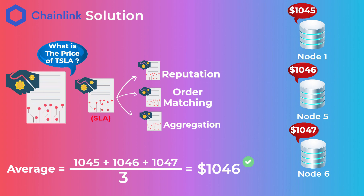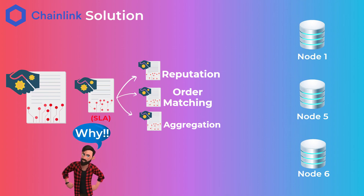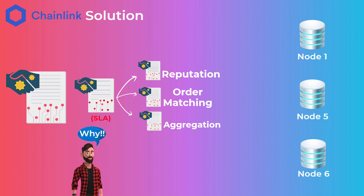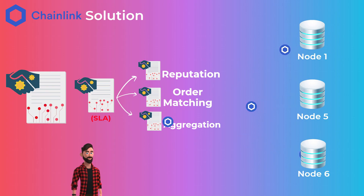After the aggregation contract gets the correct data, it sends it to the smart contract that requested it. Oracle nodes earn money from providing this data — any smart contract requesting data from oracle nodes must pay some LINK tokens, and the aggregation contract pays those tokens to the honest nodes that provided correct data.